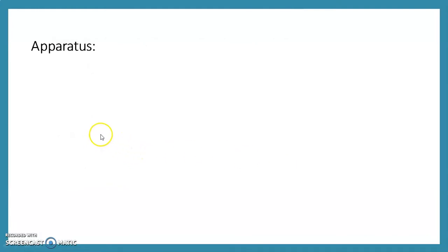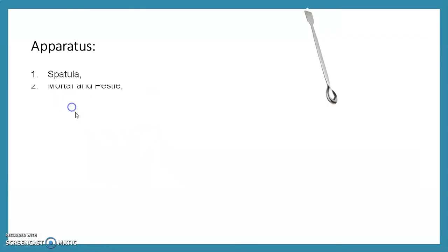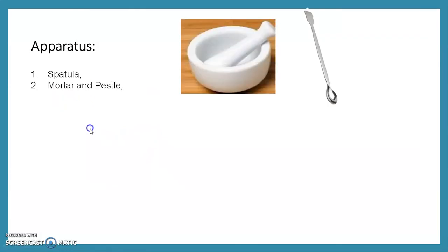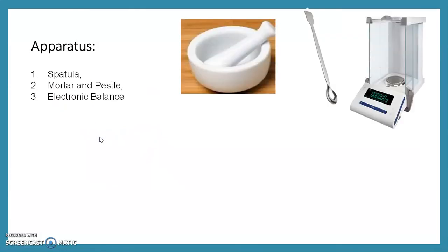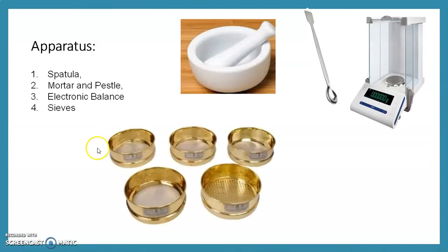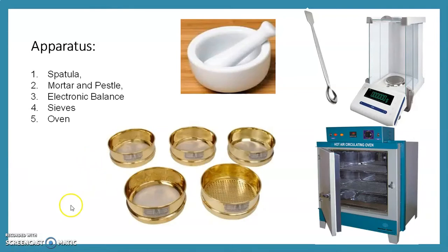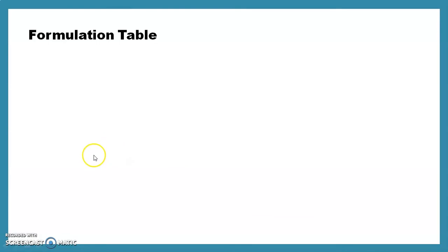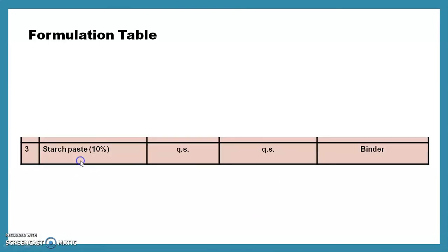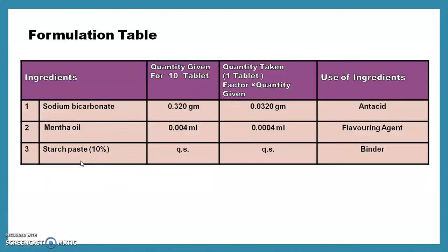The apparatus required for today's experiment includes: spatula, mortar and pestle, electronic balance, sieves of different sizes, and an oven for granulation. Now we see the formulation table required for today's experiment.